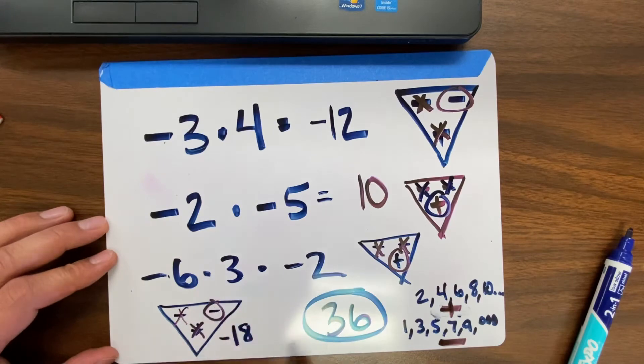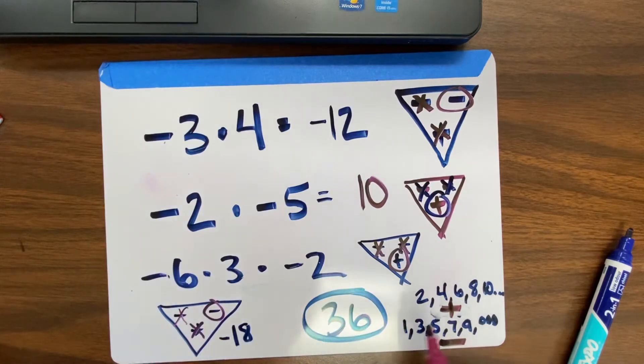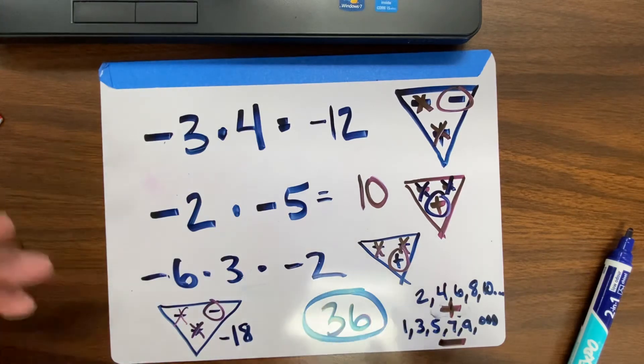If I switch this to a negative, this would become negative 36. So if you just count how many negatives there are once you're done multiplying, then you'll know. If there's 4 negatives involved, the answer will be positive. If there's 7 negatives involved, the answer would be negative. You just multiply like normal.